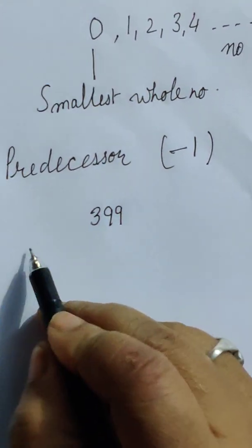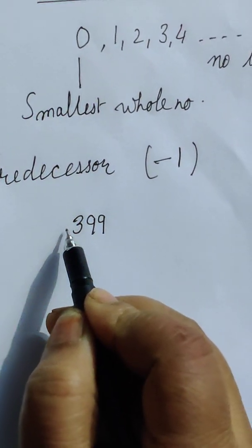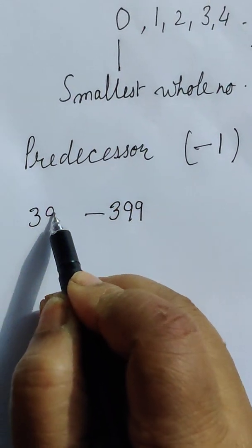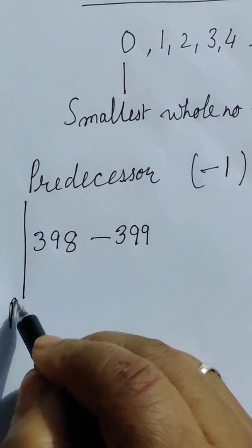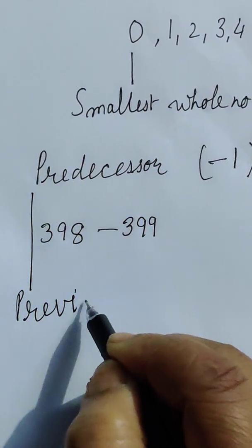What is the predecessor of 399? That is 398, a number which comes before. P stands for previous number.